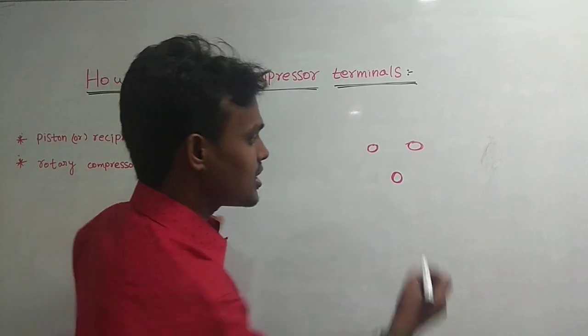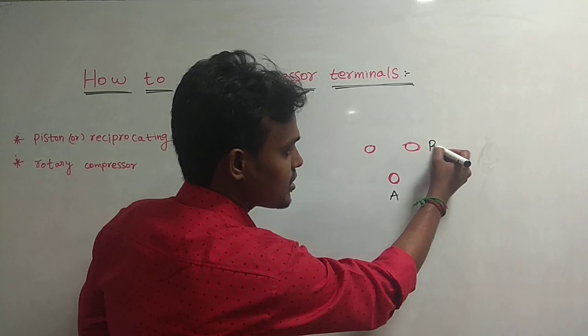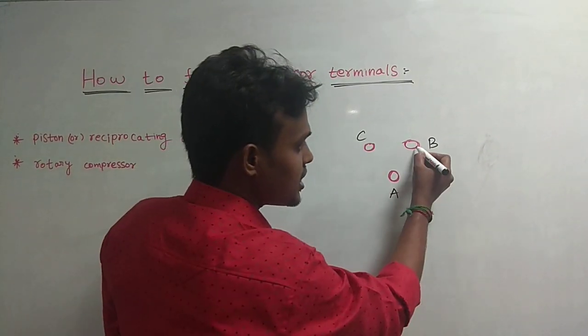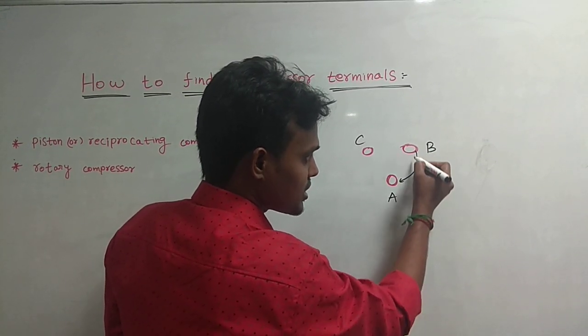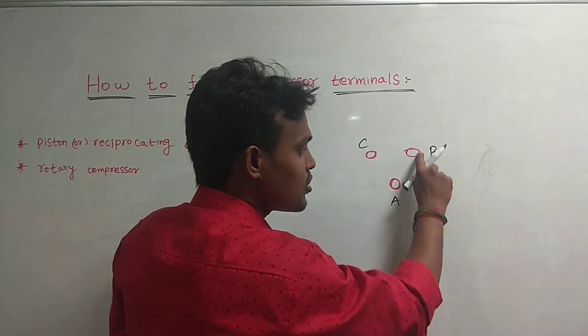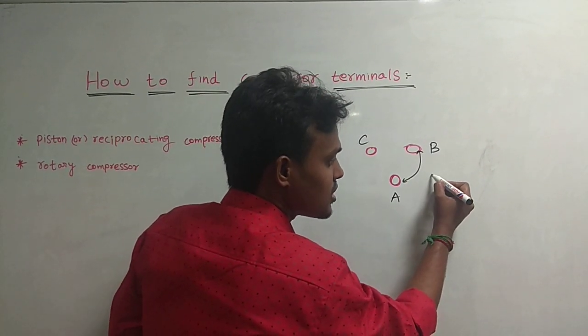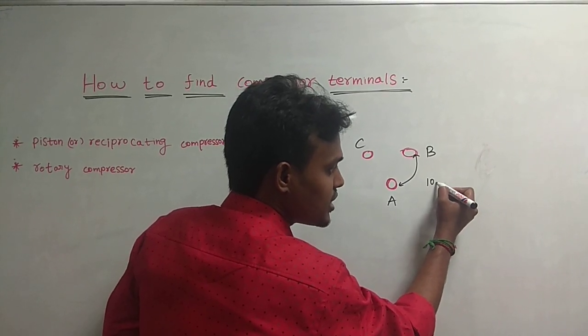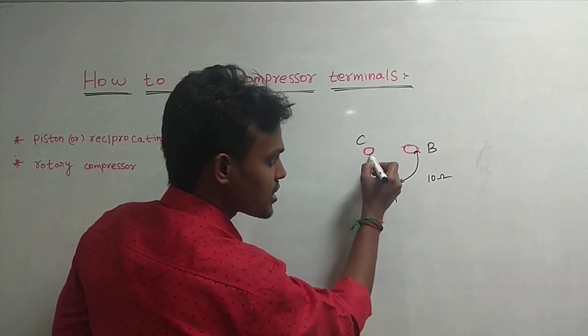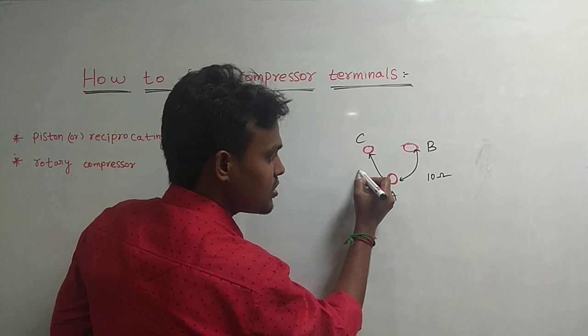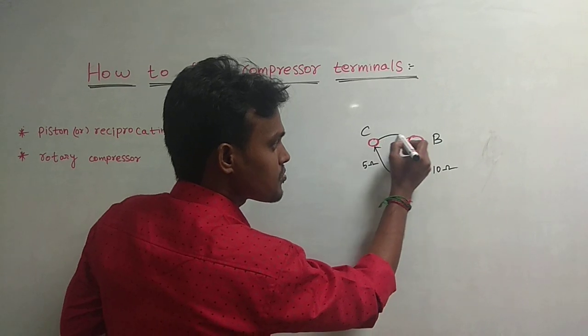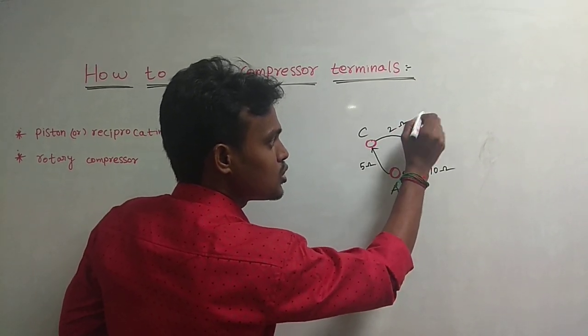First, you can use A, B, C. I will mention A, B, C. You will note that I will find out the resistance value. I will find out the ohm. I will use the resistance value. I will say 10 ohm. If you use A, C, it will be 5 ohm. If you use B, C, this is 2 ohm.